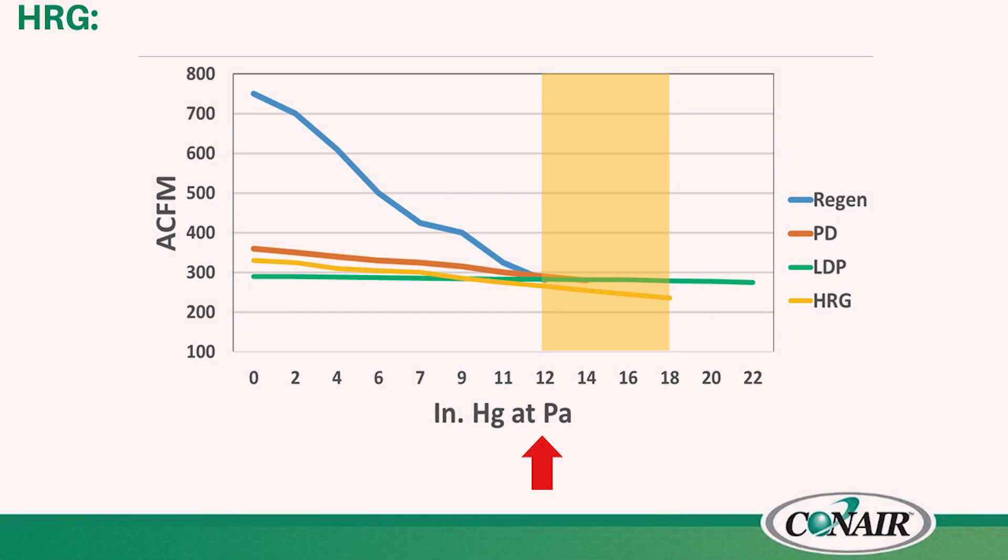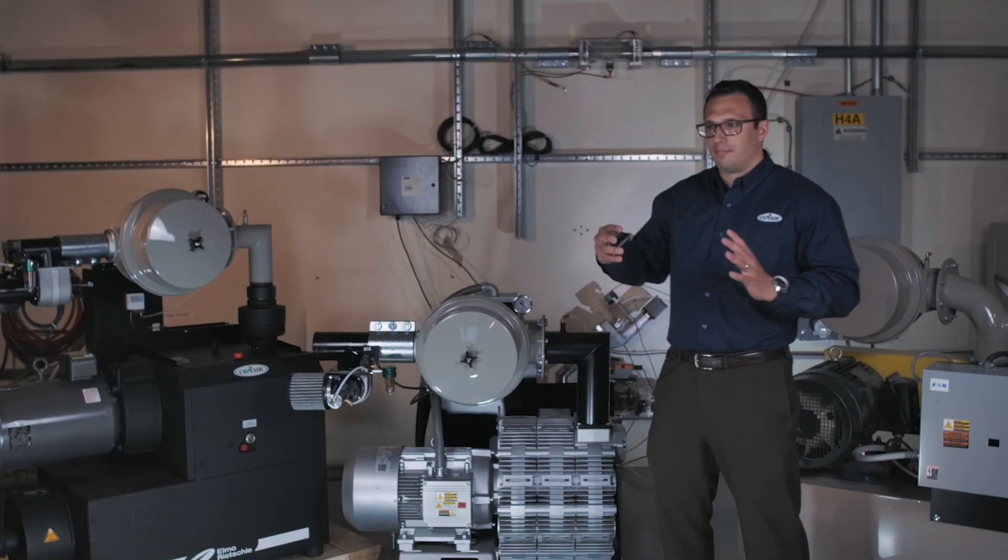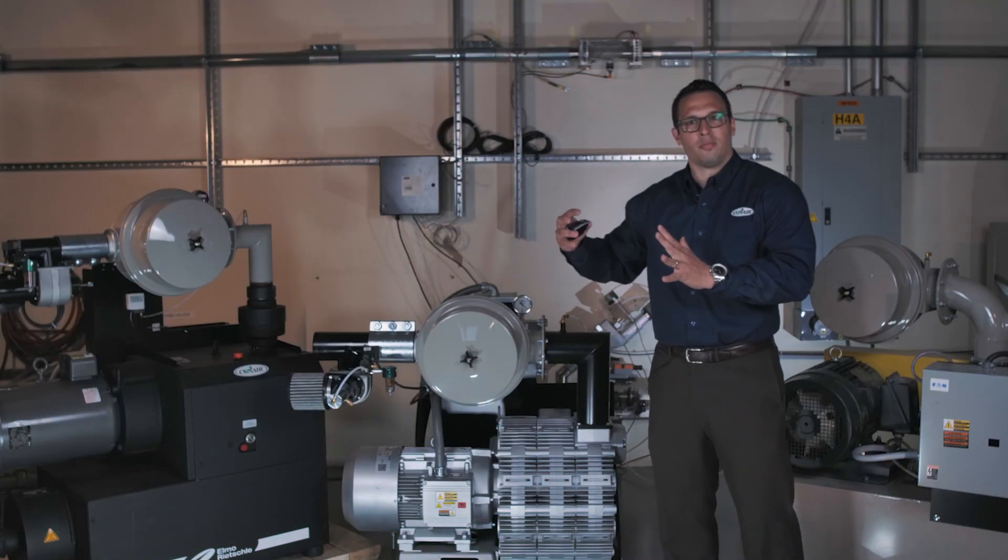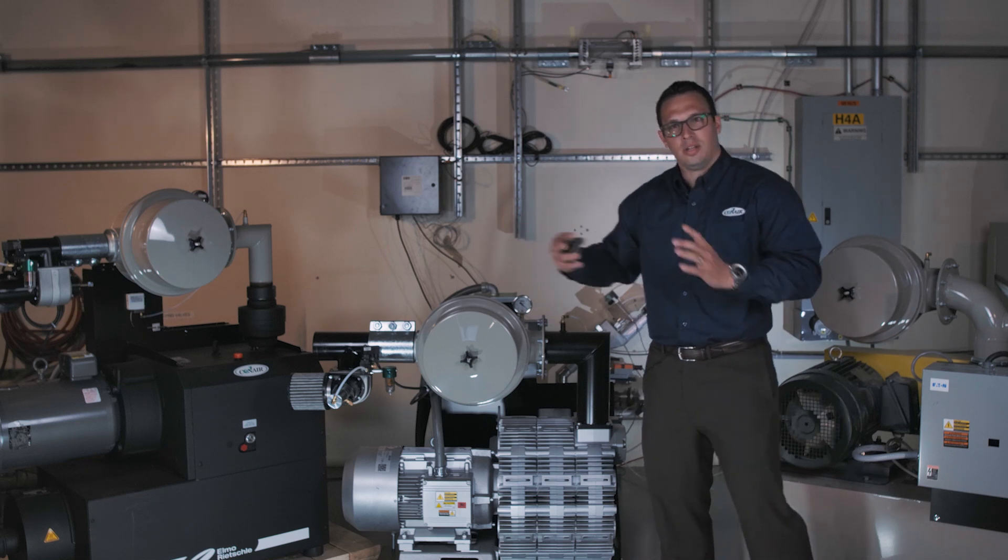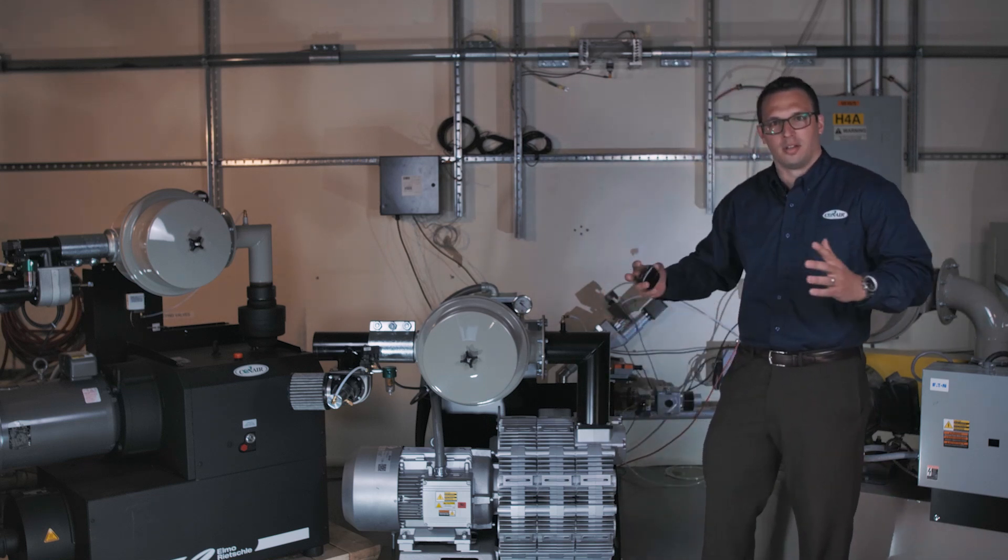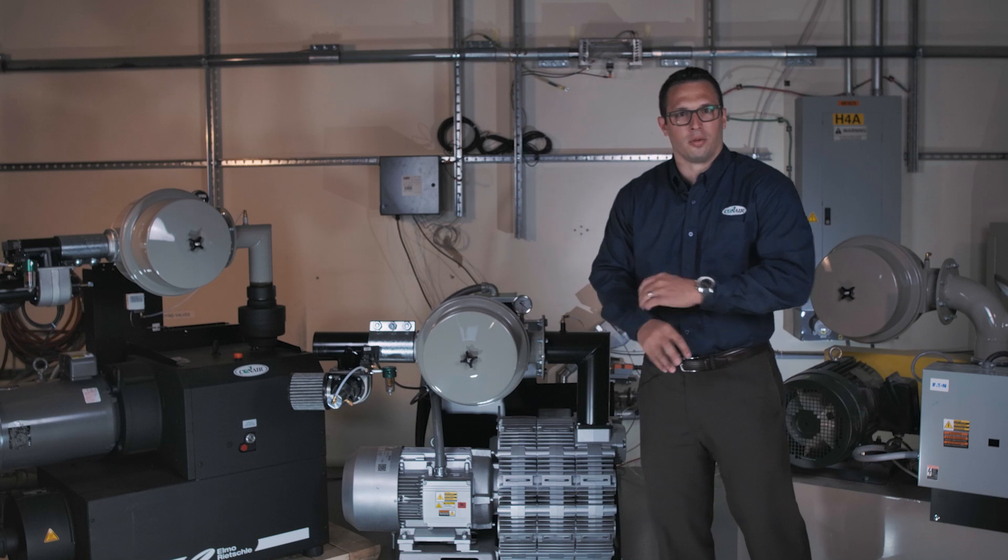Notice how on the curve, the pump curve mirrors the positive displacement pump, but extends now further into that vacuum capability all the way up to 18 inches of mercury, which can handle most, if not 75, maybe 80% of most applications where we typically would have to use the LDP pump for. We now can use this HRG pump, and it's going to be a perfect pump for those applications.